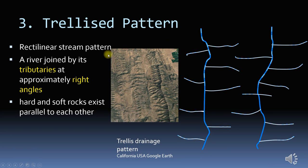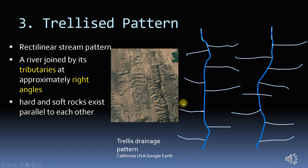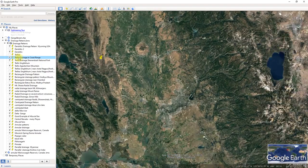The third pattern which we will discuss is the trellis drainage pattern. It develops in a region where hard and soft rocks exist parallel to each other. In this, the river is joined by tributaries at approximately right angles.